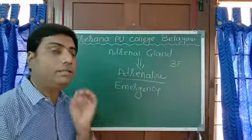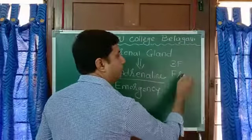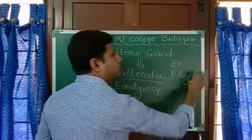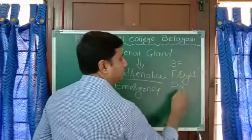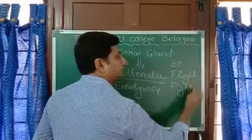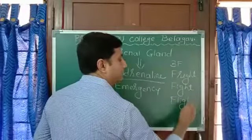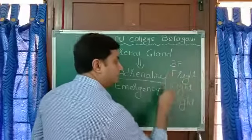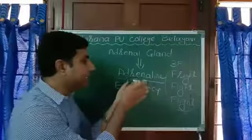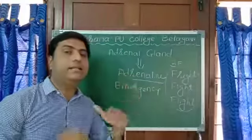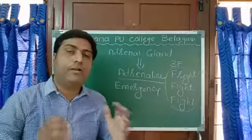What do we mean by 3F? The first F is for Fright, the second F is for Fight, and the third F is for Flight. Under these emergency conditions — Fright, Fight, and Flight — adrenaline is released, which is why it is called the emergency hormone.